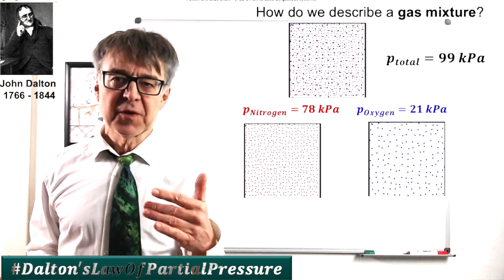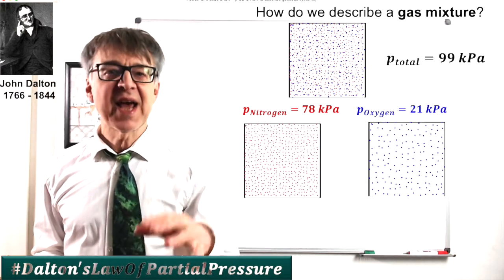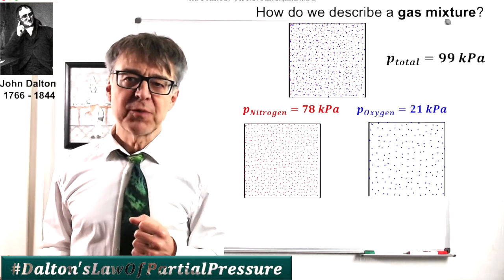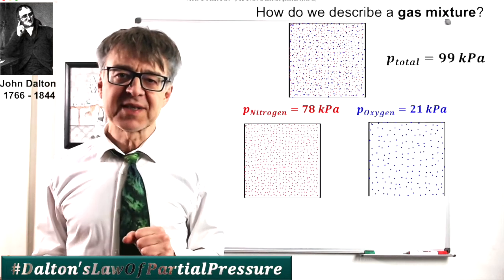Conversely, we can focus on oxygen, remove all gases except for oxygen, and end up with a partial pressure of 21 kilopascals.